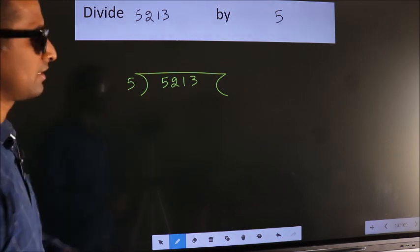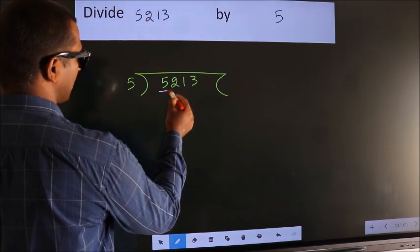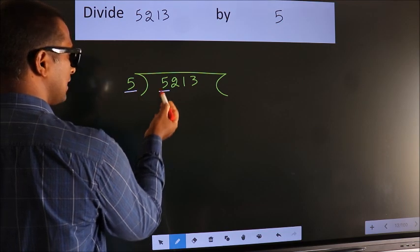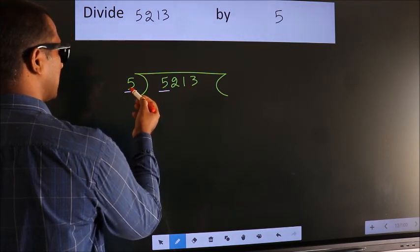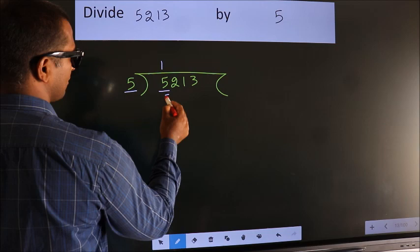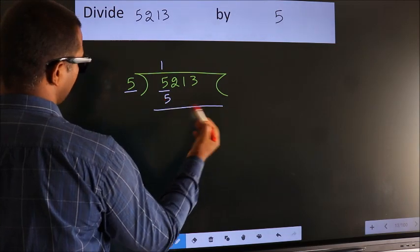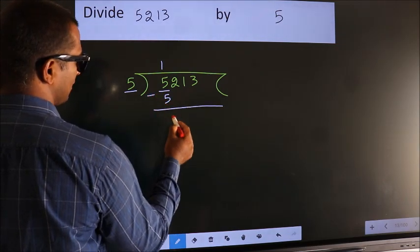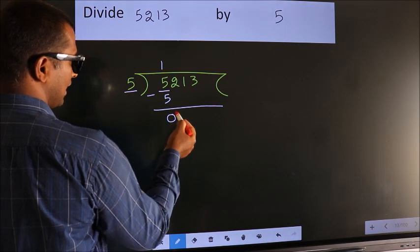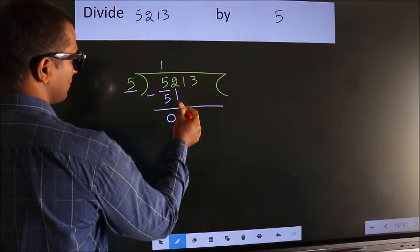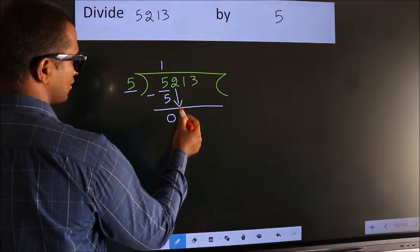Next. Here we have 5. Here 5. When do we get 5? In the 5 table. 5 once is 5. Now we should subtract. We get 0. After this, bring down the beside number. So 2 down.